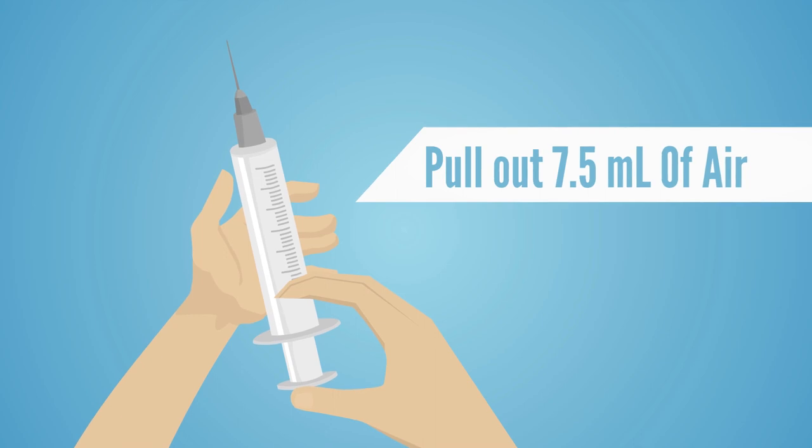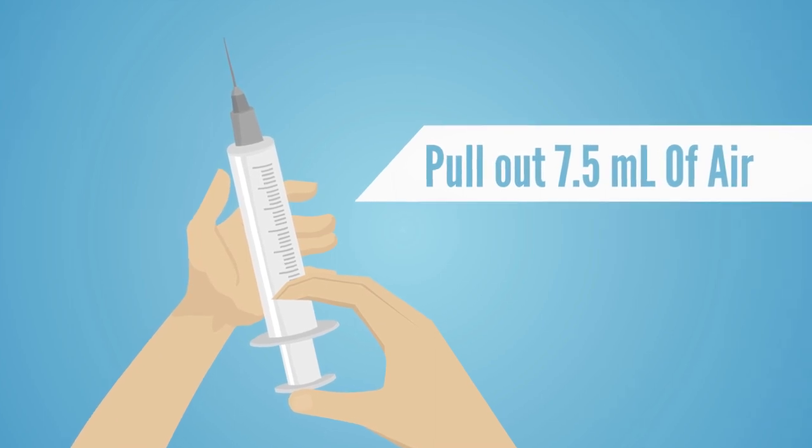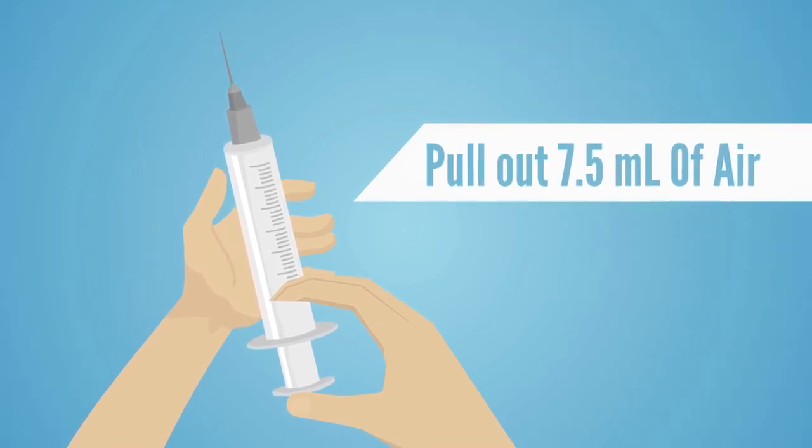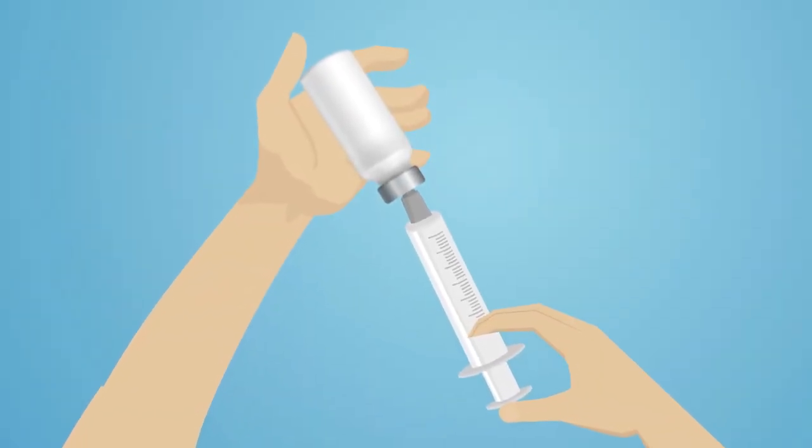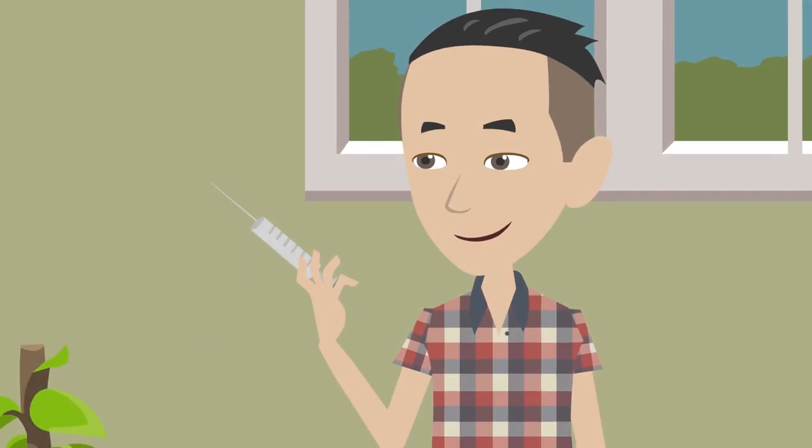Pull out 7.5 milliliters of air with mixing needle to create a suction or vacuum. Insert the mixing needle into the bacteriostatic water. The plunger, once inserted, typically releases the air.